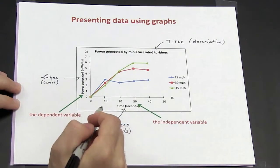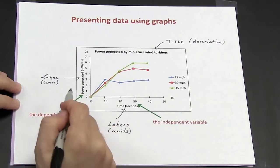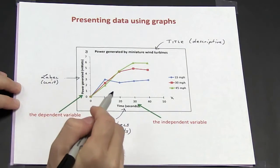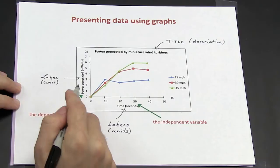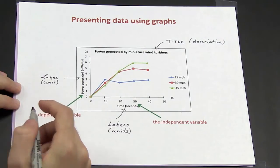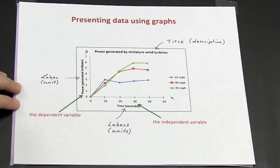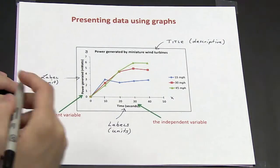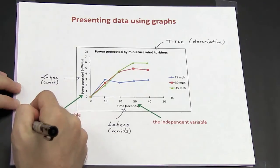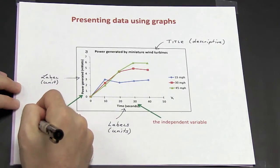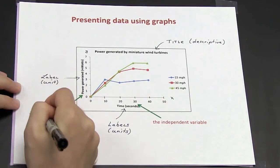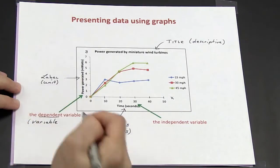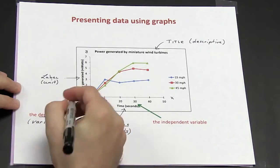When determining which variable should go on the x and the y, we look at what you are measuring during an experiment. The variable that you are measuring during an experiment is known as the dependent variable.